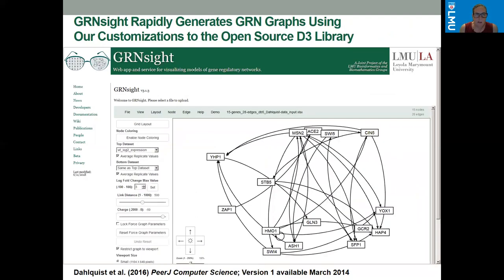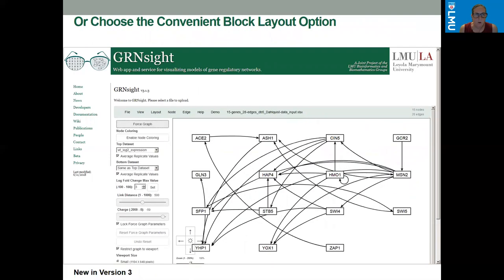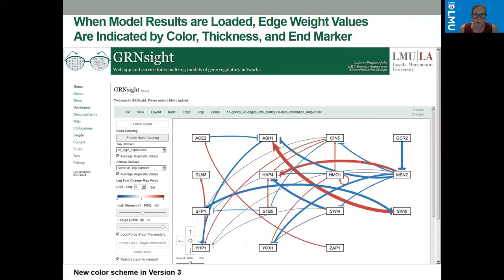GreenSight rapidly generates GRN graphs using our customizations to the open source D3 library. Besides the force graph layout, users can rearrange nodes by hand or choose the convenient block layout option. When model results are loaded, edge weight values are indicated by color, thickness, and end marker.